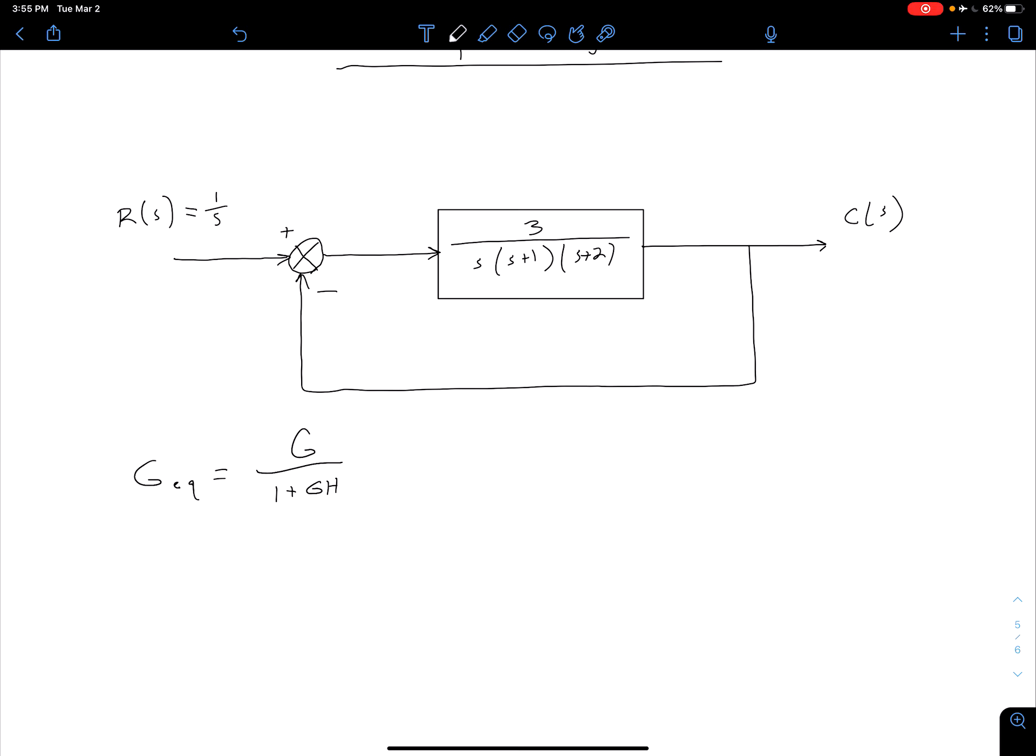The reason we want to do that is we want to look at the poles of our equivalent transfer function G_eq.